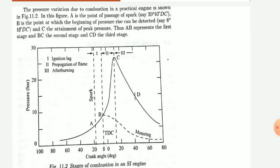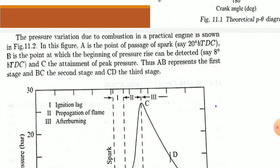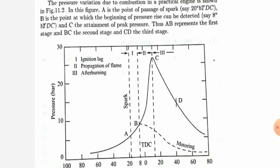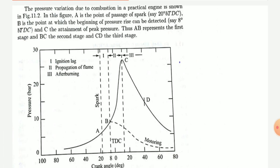The pressure variable diagram in actual practice shows three portions: the first portion is ignition lag, the second portion is propagation of flame, and the third part is after burning. We have segmented the process of combustion into these stages. At point C on the peak of combustion, the first dotted line represents ignition lag, the second dotted line represents propagation of flame, and the third dotted line represents after burning.